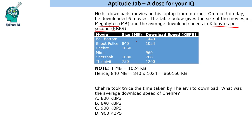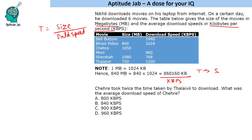The method is: first, convert the size into kilobytes. For example, 840 megabytes will be 840 × 1024, giving the size in kilobytes. When you divide the size by the download speed (in KB/s), you get time in seconds. So time = size ÷ download speed — it's the standard time-speed-distance relationship.